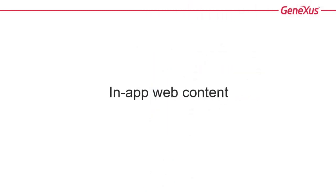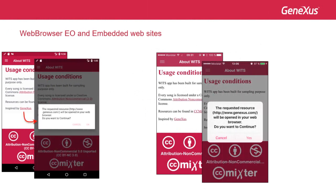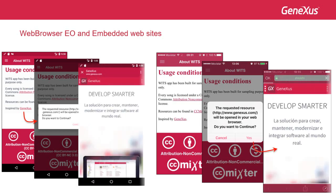We will now talk about what happens when we want to display web content in our mobile application. Here is the About panel of our game for Android and iOS. When the user taps on the GeneXus link of the panel, user confirmation is requested prior to the opening of the link in the device's web browser.